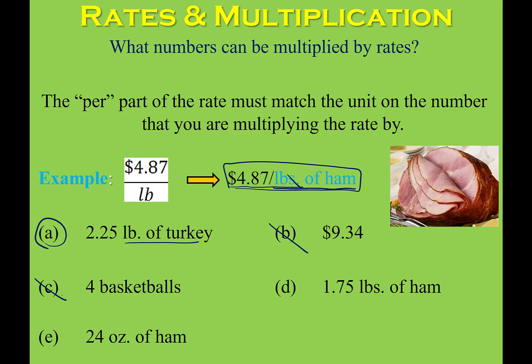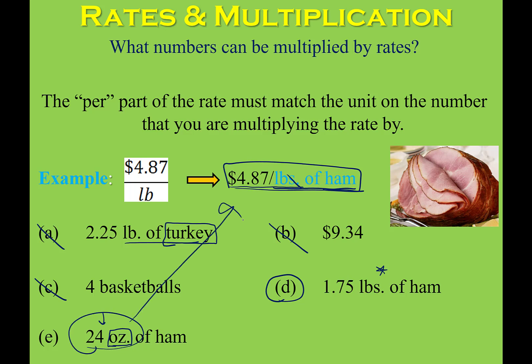I'm going to leave this in because I've just made a mistake — it's something you have to watch for. That says turkey, and this says ham. So option A actually does not work, because while it does say pounds, it's the wrong type of meat. But option D says pounds of ham, so that one would be good to go. The last option says ounces of ham — the ham matches, but the unit doesn't. You could convert 24 ounces into pounds, but that's an extra step. You can't simply multiply 24 times $4.87 per pound without converting first.